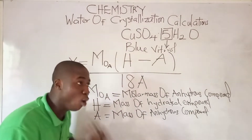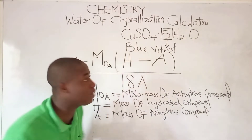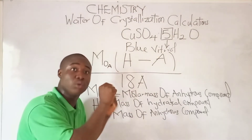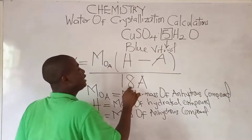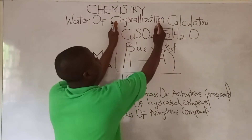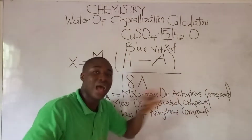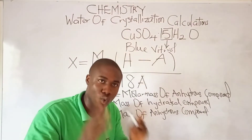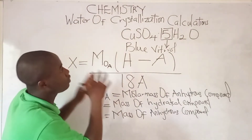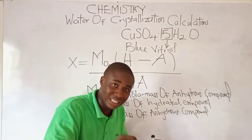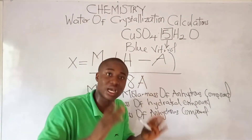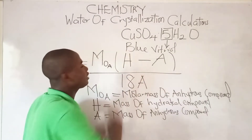MOA means molar mass of the anhydrous compound, so when calculating the molar mass you only calculate this part of the compound — not the water — because anhydrous means without water. This formula is very important when solving problems on calculating the number of moles of water of crystallization in a compound. Now let's do that.